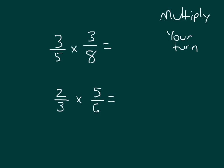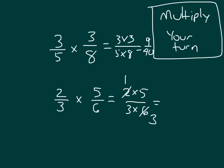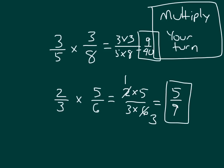Your turn. Multiply. Remember to express answers in simplest form. Pause the video while you solve these. Did you show all your steps? Three times three over five times eight would equal nine-fortyths, and nine-fortyths is already in simplest form. For the second one, it would be two times five over three times six. Did you cancel? One times five is five, three times three is nine. Remember, when you're multiplying, to express answers in simplest form. This equation here is two-thirds times five-sixths, which equals five-ninths.